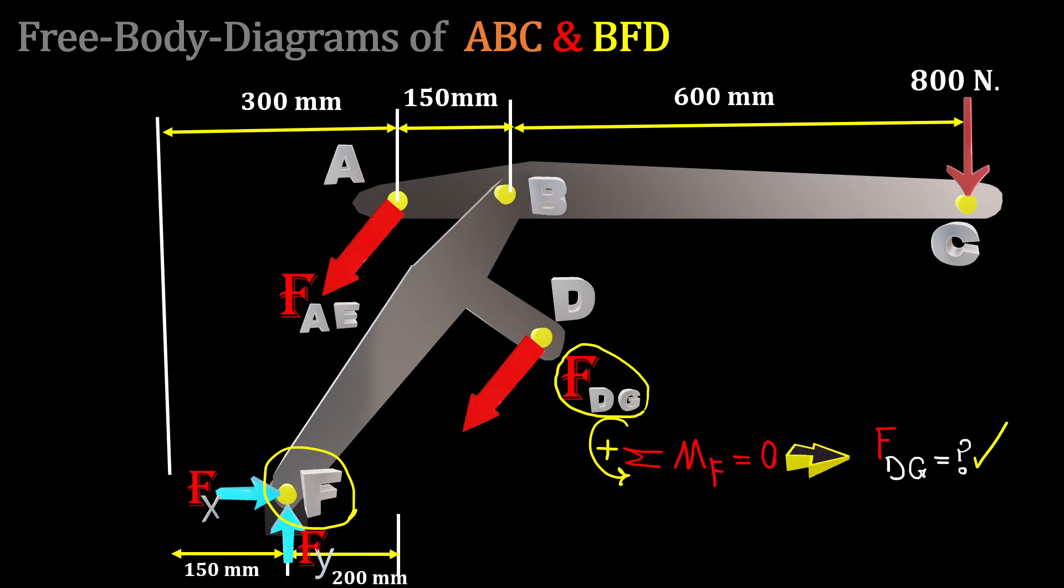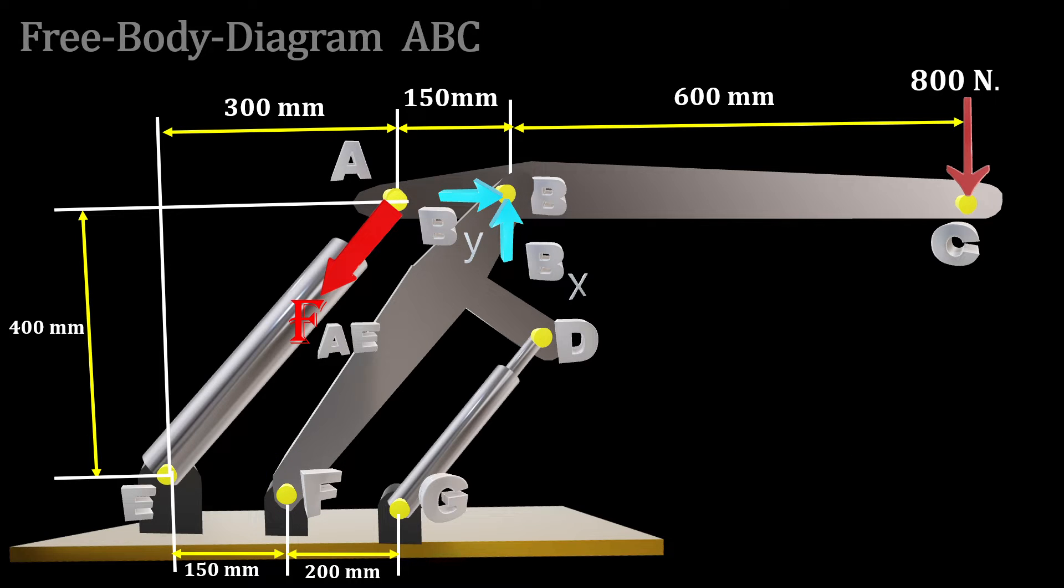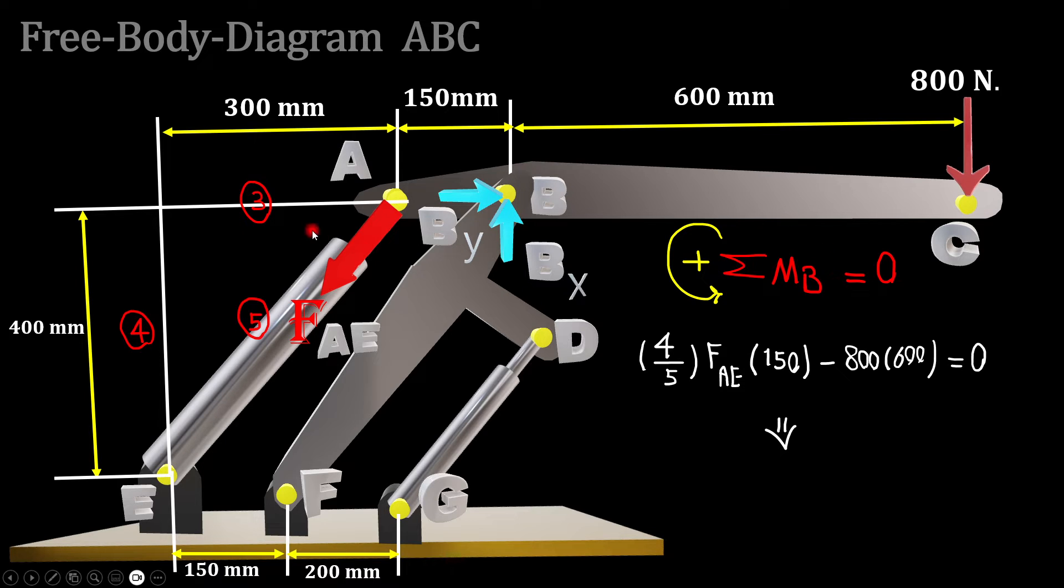In the free body diagram of ABC, summation of moment about point B goes to zero. By having the dimensions and right angle triangle over here, this is 300, 400, with 500 hypotenuse. So this is a 3-4-5 triangle.